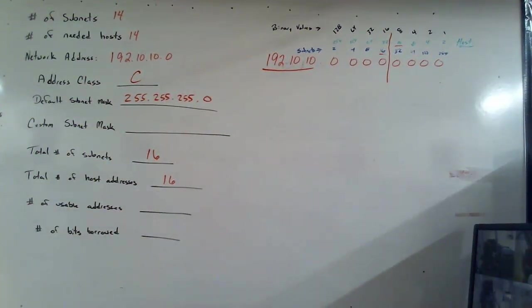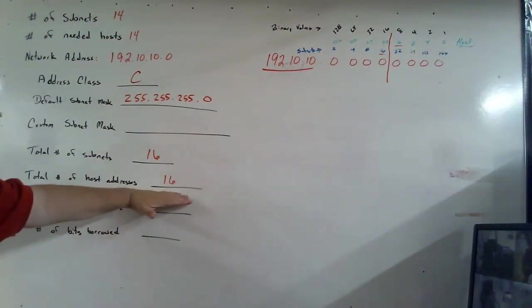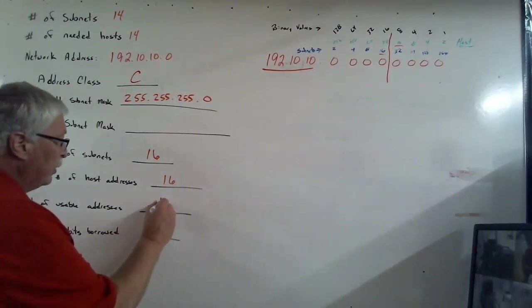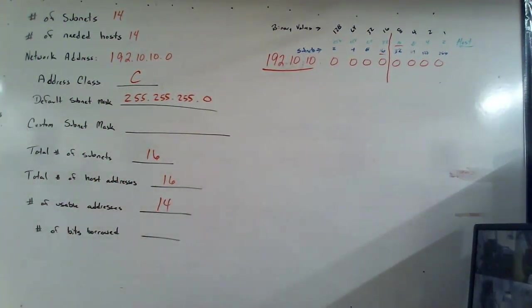But we know we have 16 total host addresses. But you remember, we're always interested in the usables. And that's really what this needed host are. We need to have at least 14. We know there are two addresses we cannot use. So if we subtract two from 16, we are left with 14 good numbers. And yes, that will meet the 14 that we need.